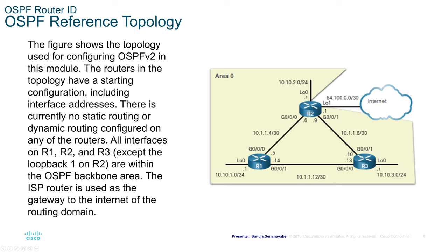This lecture is sometimes a little bit lab heavy. I'm talking about the slides and the concepts associated with them so that you have a better idea about the key concepts of OSPF Version 2. I will post separate videos on lab demonstrations showing how you can configure OSPF on a live lab demo, posted to my YouTube channel later. Remember this topology: you have three routers R1, R2, and R3. All interfaces except the loopback one on R2 are within the OSPF backbone area because that loopback is connected to the internet.